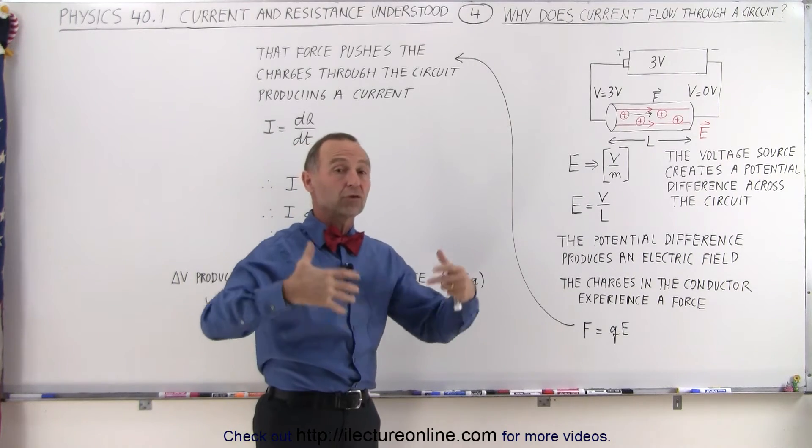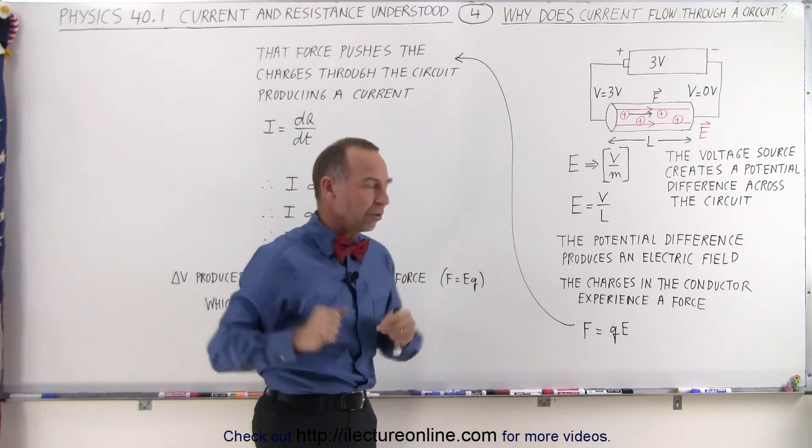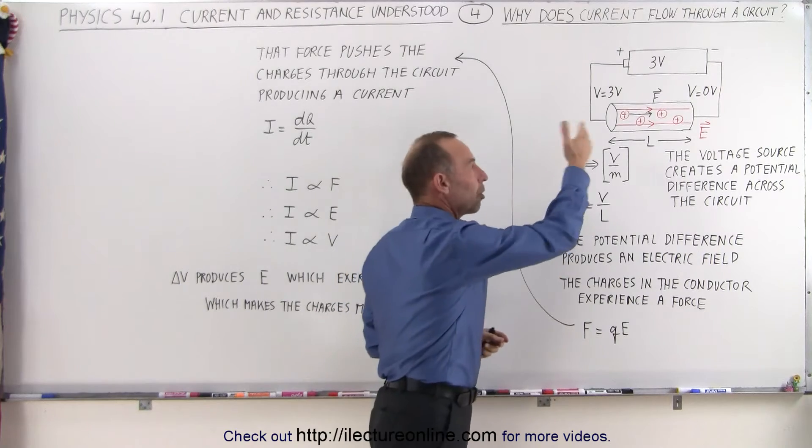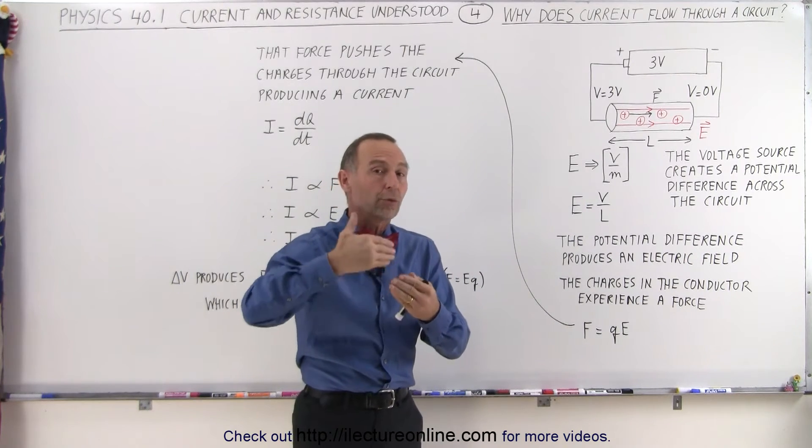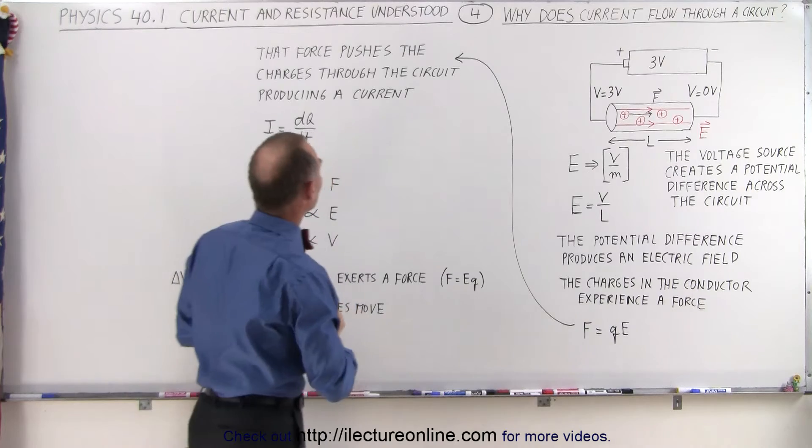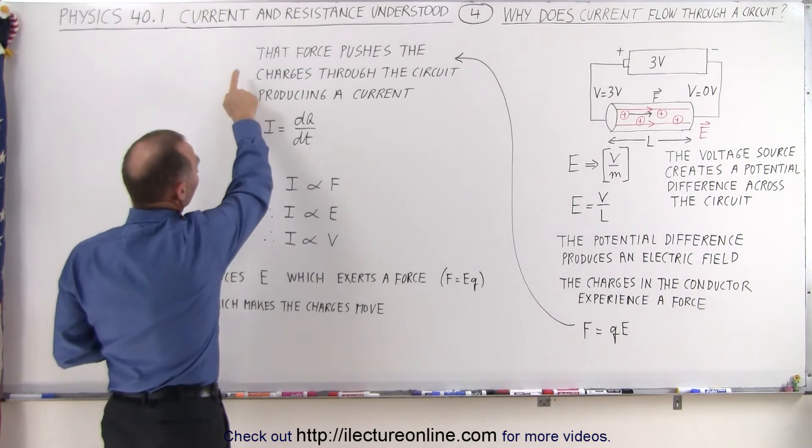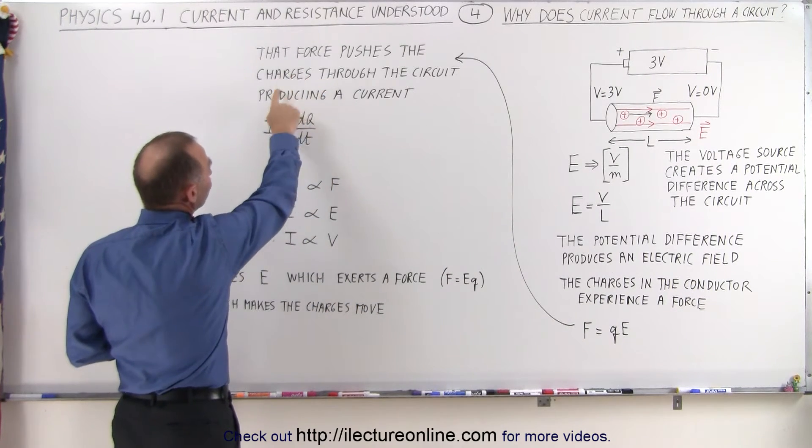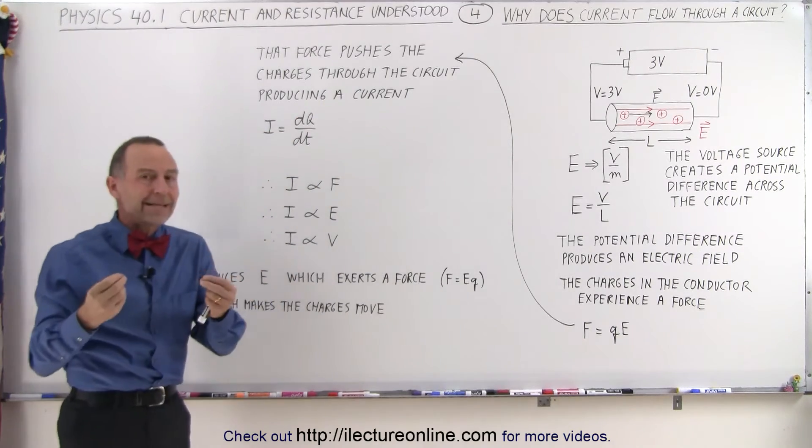You put in a bigger battery, a stronger battery, one that has a greater potential difference, you create a stronger electric field, and then you create a stronger or greater force on each of the charges. So the force then pushes the charges through the circuit producing a current. And that's the idea.